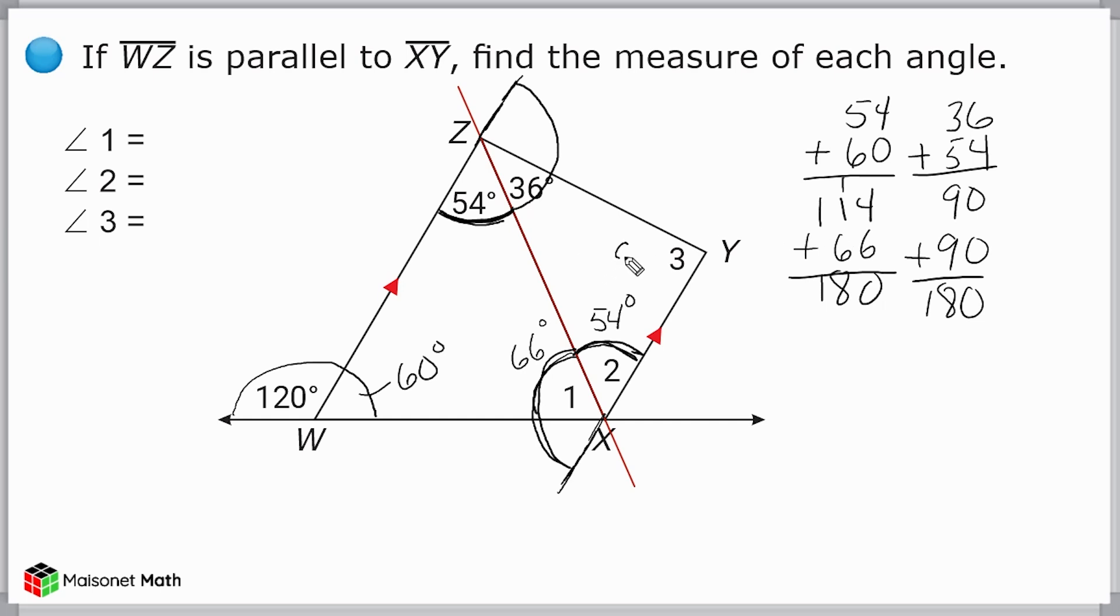So now we know that angle 1 is 66 degrees, angle 2 is 54 degrees, and angle 3 is equal to 90 degrees.